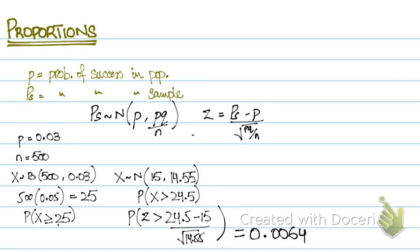This is how you do this using a binomial distribution. But this exact same question can also be done using a proportion. So P-hat follows a normal with P, that's probability of success being 0.03. And your variance becomes 0.03 P into 0.97 Q upon N, that's 500 in this case.